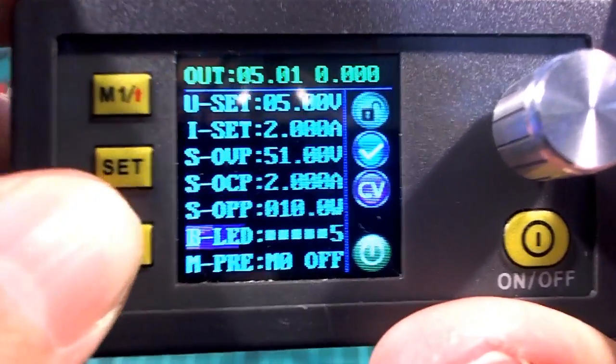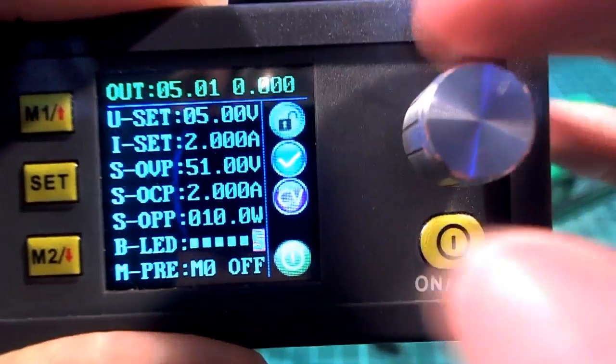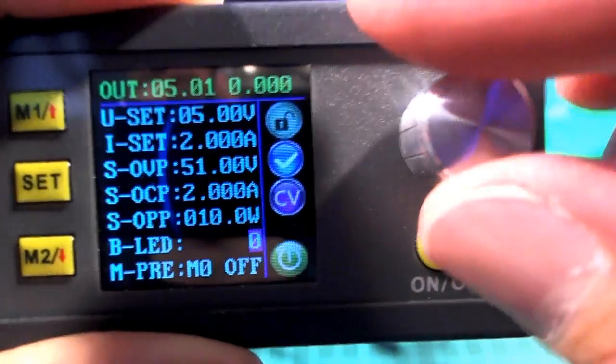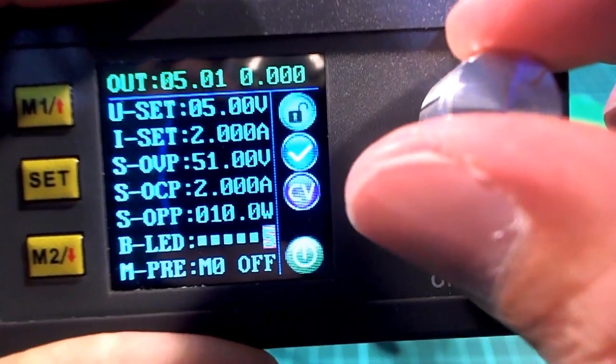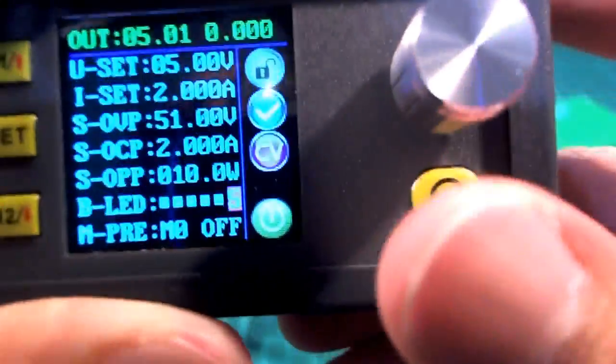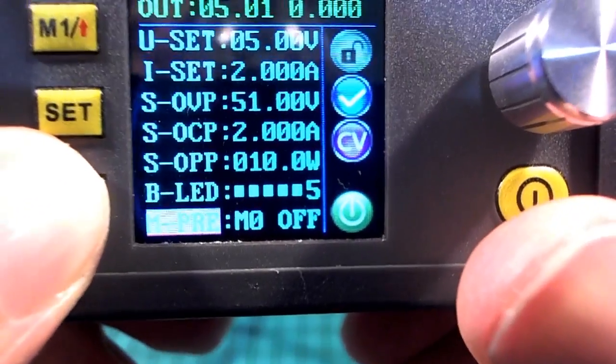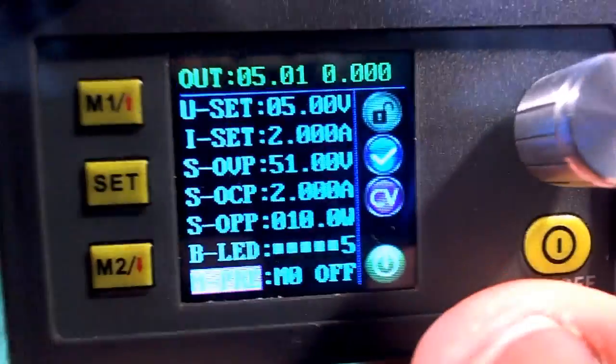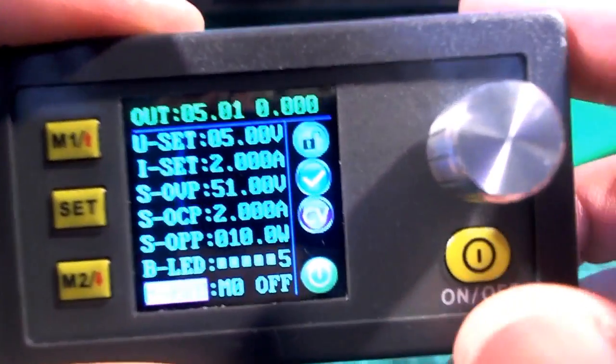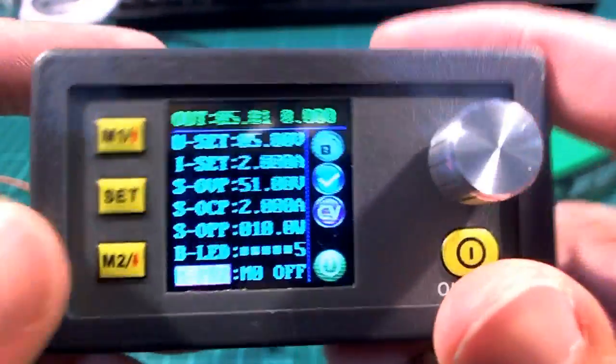Then the next one here is just a brightness setting. So if I hit this button—this is not a potentiometer by the way, it's a rotary encoder so it just goes round and round forever—and this just lets you change the brightness of the screen a little bit. Probably nobody would ever use that to be honest.